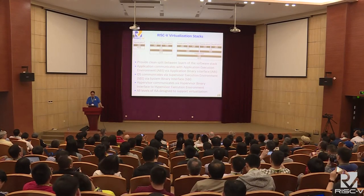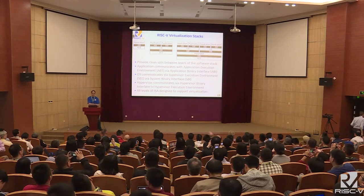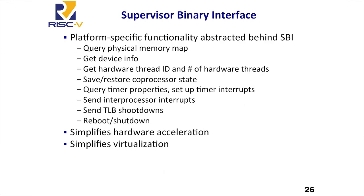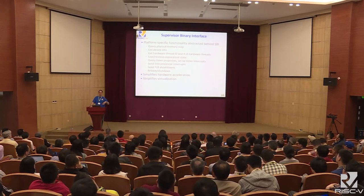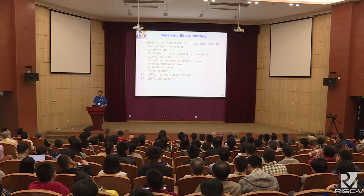We designed RISC-V's privilege levels to support virtualization very well. We're working closely with the Linux KVM maintainer on the design of the next hypervisor support, and I expect it should be up and running by end of this year. Another thing we did to help with virtualization is avoid exposing too many hardware features to software at the supervisor level, and instead provide a Supervisor Environment Interface — calls you make down to the lower level to extract things like physical memory map, device info, and to do things like inter-processor interrupts and TLB shootdowns. The goals are to simplify the interface, enable different platforms to have hardware acceleration for TLB shootdowns and inter-processor interrupts, and help simplify virtualization.